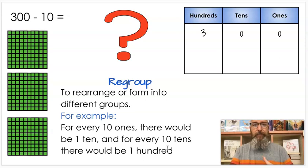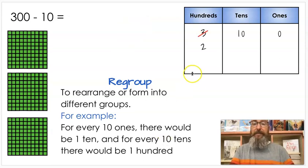So I'm going to trade. I'm going to trade in my hundred to 10 tens. So I'm going to take away one of my hundreds and move them over here to 10 tens. Because remember 10 tens makes 100. So I still have 300: 200, 100, 300.